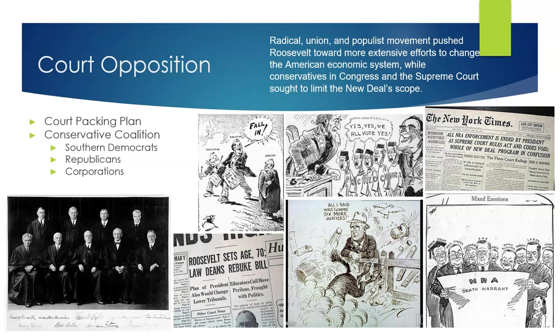Faced with these setbacks, Roosevelt proposed a controversial plan to expand the Supreme Court, known as the Court Packing Plan. The plan aimed to add new justices to the court for each justice over the age of 70, allowing Roosevelt to appoint justices sympathetic to the New Deal. However, there was strong opposition, including from members of Roosevelt's own party, and the idea was abandoned. This controversy, along with the court's willingness to adapt its interpretations of constitutional issues, eventually led to a shift known as the switch in time that saved nine, in which some justices became more inclined to uphold New Deal legislation.